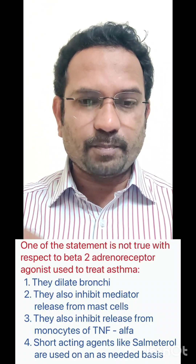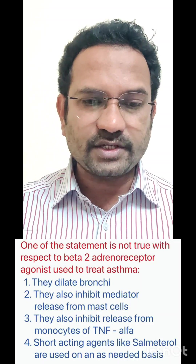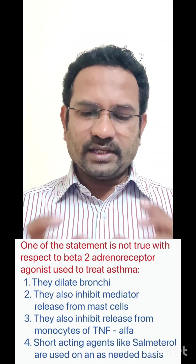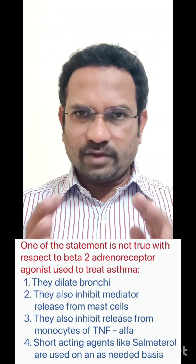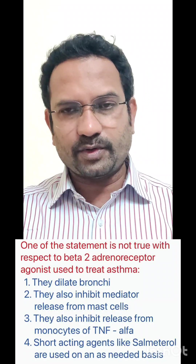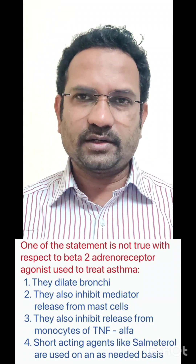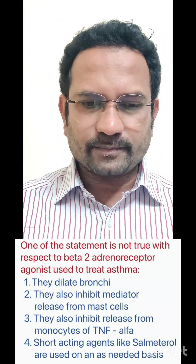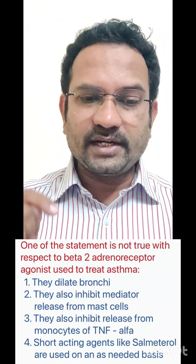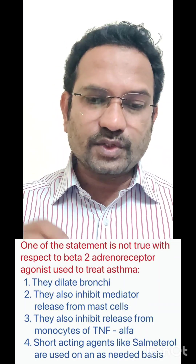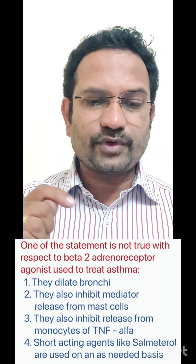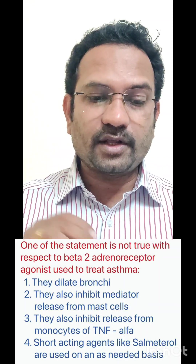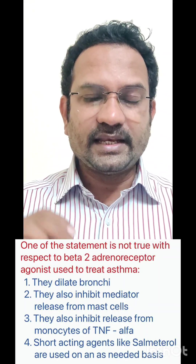Now the second question: one of the following statements is not true with respect to beta-2 adrenoreceptor agonists used to treat asthma. Out of four options, three are correct and one is not — we need to identify it. The options are: they dilate bronchi; they inhibit mediator release from mast cells; they inhibit release of tumor necrosis factor alpha from monocytes; and short-acting agents like salmeterol are used on an as-needed basis.